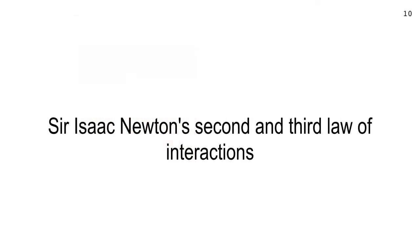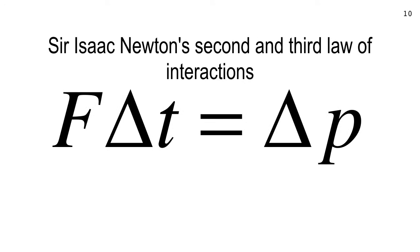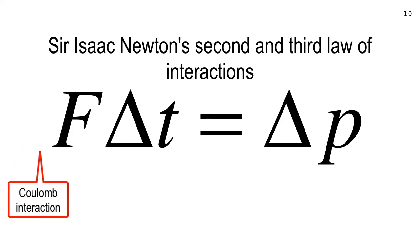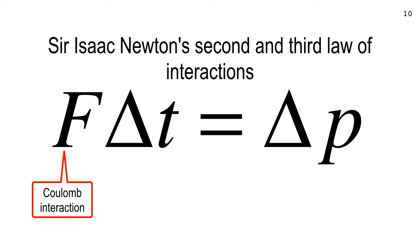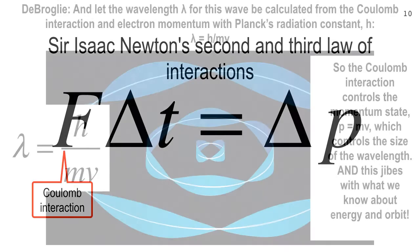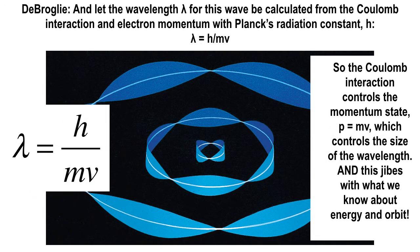Let's talk about Newton's second and third law interactions. Newton's second law: F net delta T equals delta P. This law applies to both objects that are interacting. The coin of the realm for interactions is momentum, delta P. In the atomic sense, the force involved is the Coulomb interaction. And delta P is where de Broglie's hypothesis comes in.